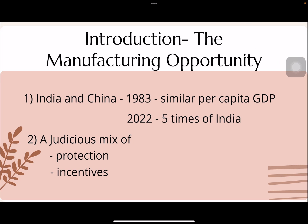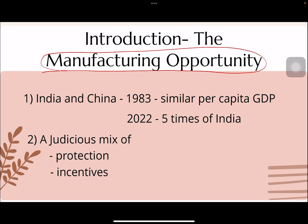The missed bus is essentially a manufacturing opportunity that India missed in the 1980s — an opportunity that other Asian economies such as China, Vietnam, Singapore, South Korea, and Japan have utilized. To go into details: India and China in 1983 had similar per capita GDP.